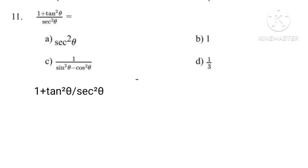1 plus tan squared theta upon sec squared theta equals sec squared theta upon sec squared theta equals 1.